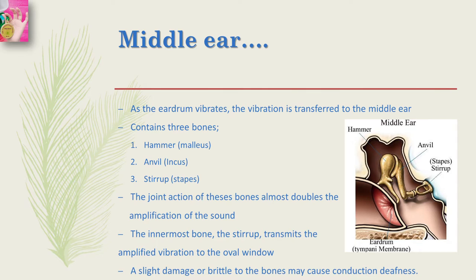The three small bones are: the hammer (also called malleus), the anvil (also called incus), and the stirrup (also called stapes). These are Latin words named by the resemblance of their structure. If you search pictures of a hammer, anvil, and stirrup online, you will realize that the three small bones resemble these objects. The joint action of these bones results in amplification of the sound.